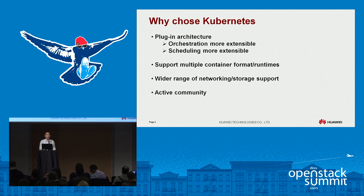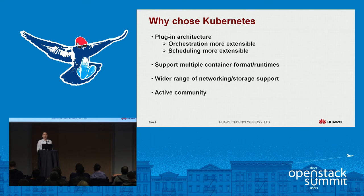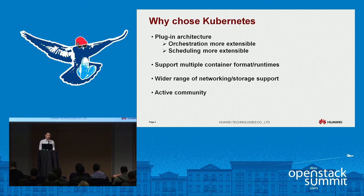We might want affinity between new tasks and existing running tasks to make things efficient, or we might want anti-affinity, placing containers on different nodes purposefully for high availability. Kubernetes helps us make this easier — it nicely supports this, and we can customize plugins to fulfill high availability and scaling requirements.